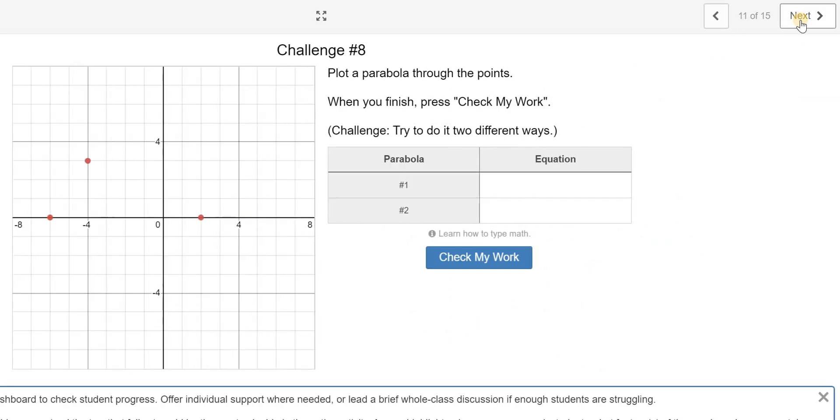So this question here, slide 11, is asking you to do 1 in vertex form, which is y equals a, x minus h squared, plus k.